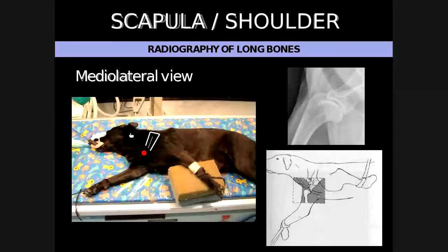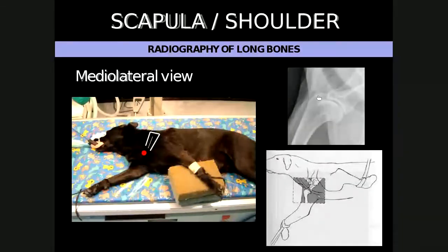Unfortunately, the scapula will always show some degree of superimposition with these structures. The beam needs to be centered on the shoulder joint, which is located by palpating the major tubercle. Or, if the scapula needs to be radiographed, one can center a little bit more proximally between the shoulder joint and the dorsal scapular margin.